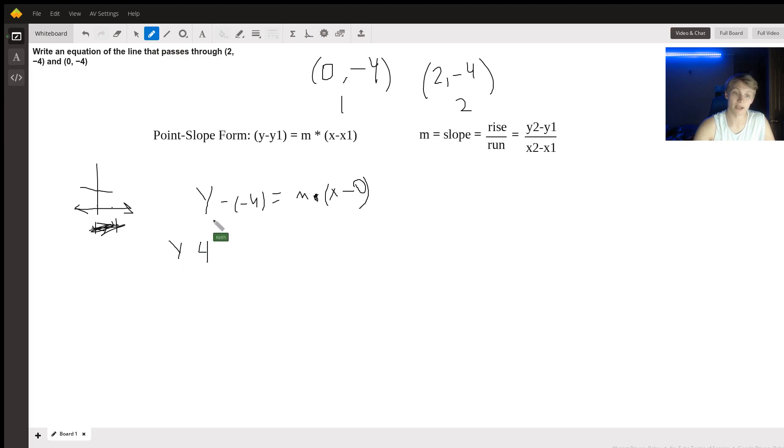There should be a times sign there. So simplify this a little bit. y minus negative 4 is plus 4, equals m times x. And if you actually wanted to put this into y-intercept form, you would just subtract negative 4. This is why I say you should just start from point-slope form because you can get y equals mx plus b from here.